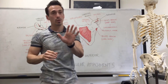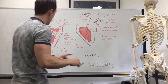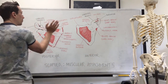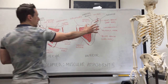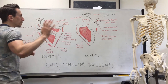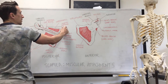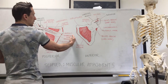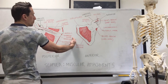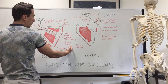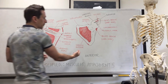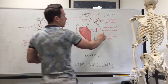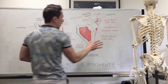There are five muscles I want to talk about today. You can see in my drawing here I've got a posterior view and an anterior view. The five muscles are levator scapulae, trapezius, rhomboid minor, rhomboid major, serratus anterior, and pectoralis minor.